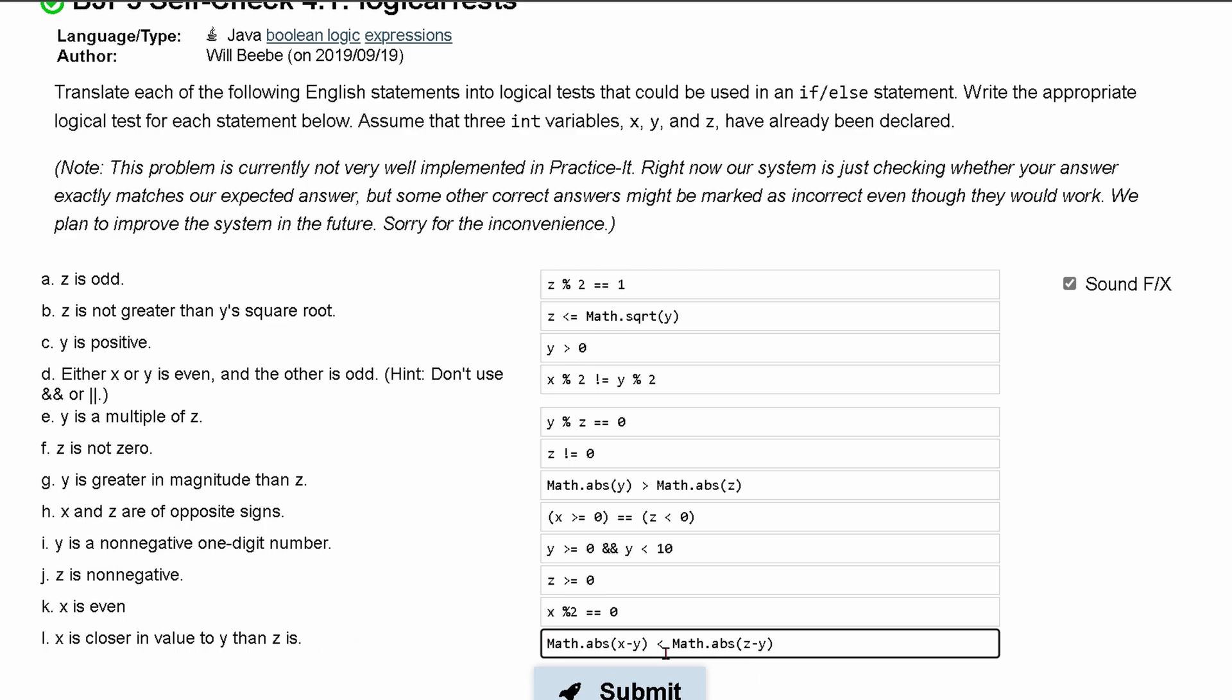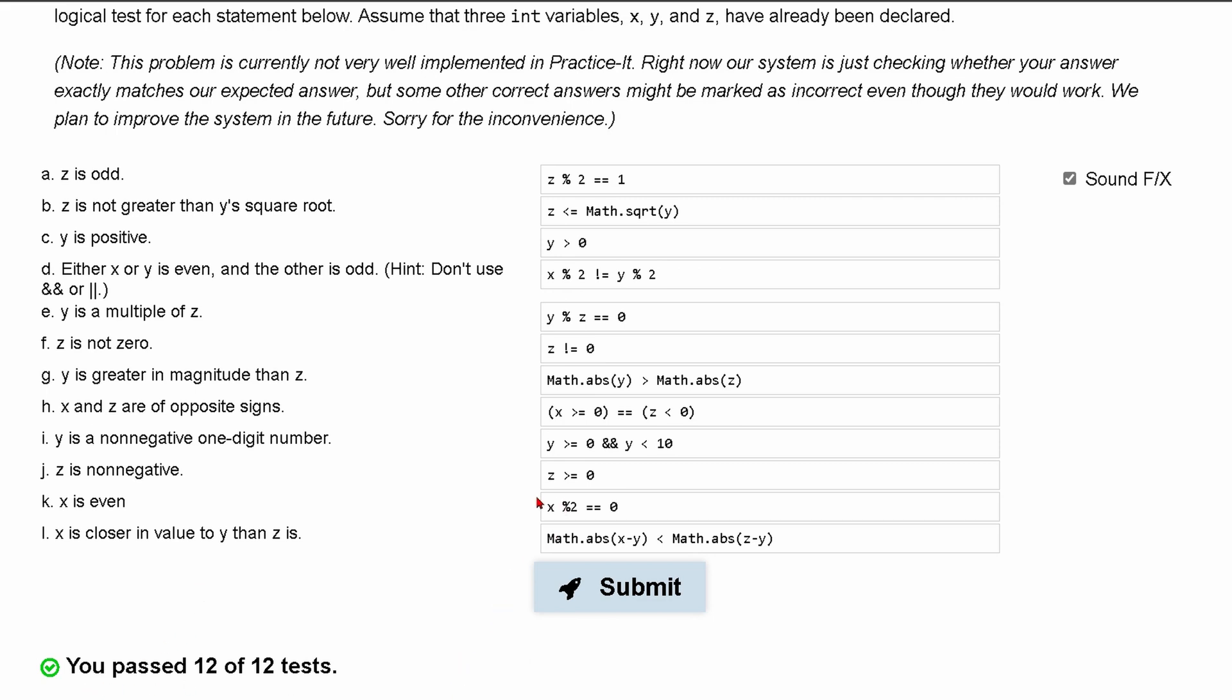Then we have x is closer in value to y than z is. So let's check this. This is for sure absolute value because we're just checking the distance. So we have math.abs. x is closer in value to y. x minus y. So y to z. We're just going to subtract these here. And we just want to compare this. And if this side is smaller x to y, that means it's a smaller value, smaller distance. So x is closer to y than our z is. So let's submit. We're going to get 12 out of 12 tests passed.